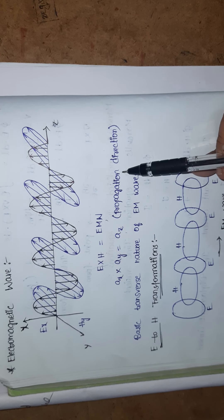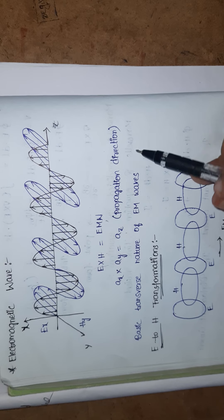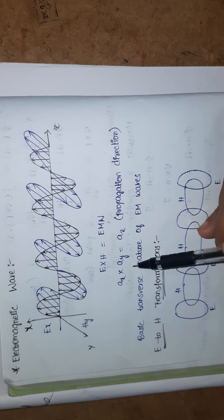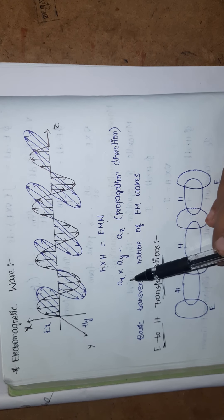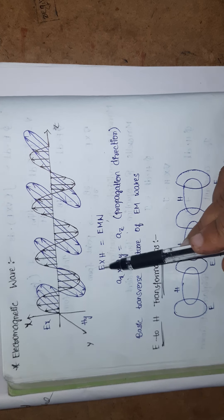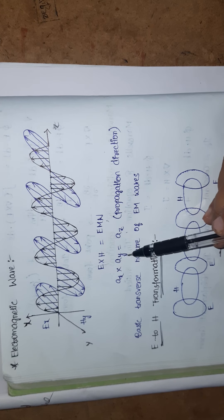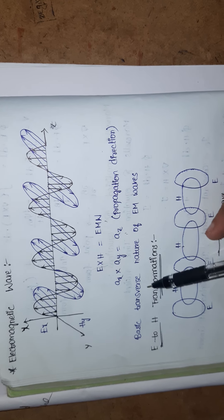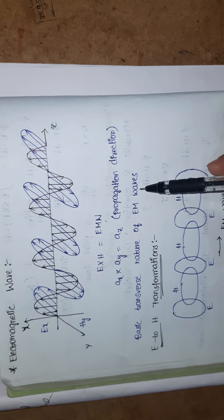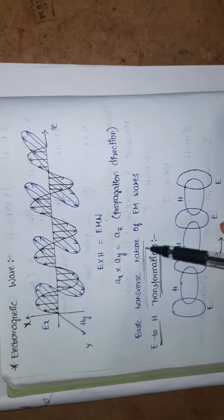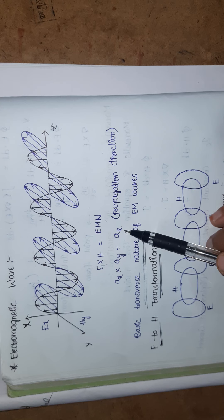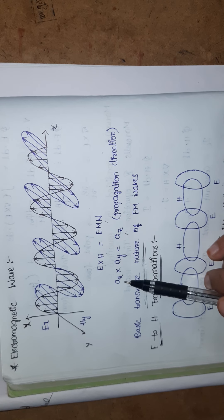The electromagnetic wave is propagating along the z direction. ax, ay, az are unit vectors representing directions. E is along x, H is along y, and the wave propagates along z. This is the transverse nature of electromagnetic waves, meaning E and H are 90 degrees apart, and the EM wave is also 90 degrees to both electric and magnetic fields — three dimensional.